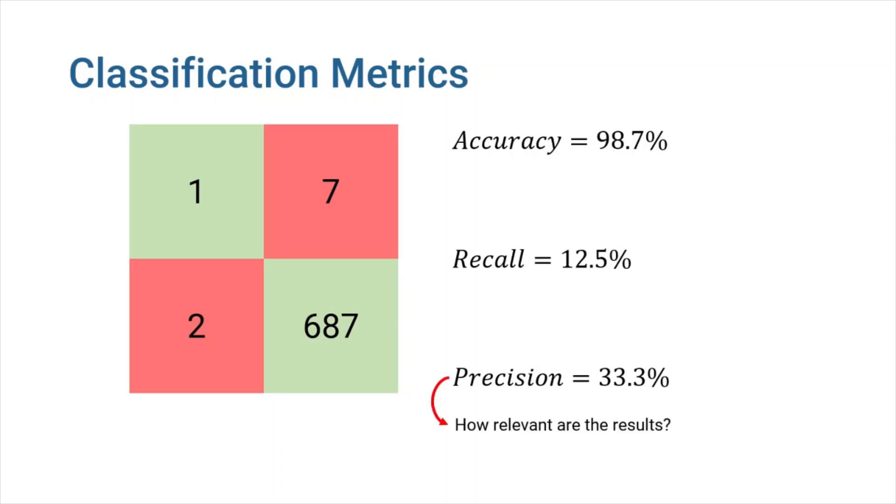Precision tells us how relevant our results are. A high precision means when our model classifies a person as a superhero, we can trust it, because most of the time that it positively labels someone as superhero, it is correct.